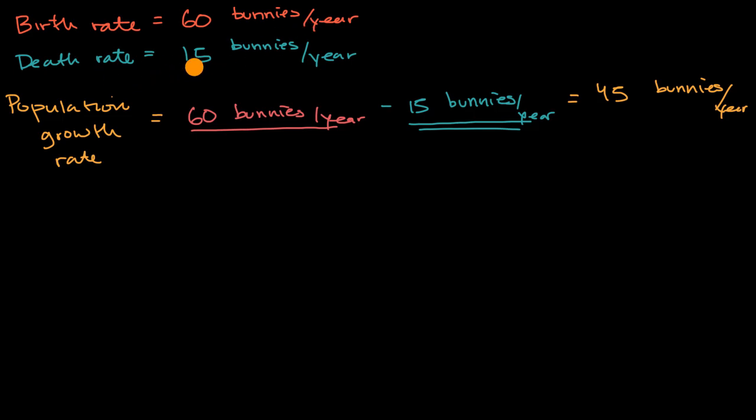And the death rate is 15 bunnies per year. Well, what's the population growth rate? In a given year, you would expect 60 bunnies to be born, so that would add to the population, and you would expect 15 bunnies to die, so that would take away from the population for a net increase of 45 bunnies per year.